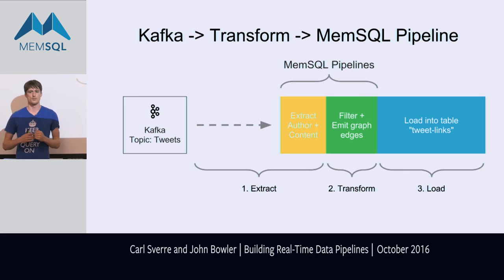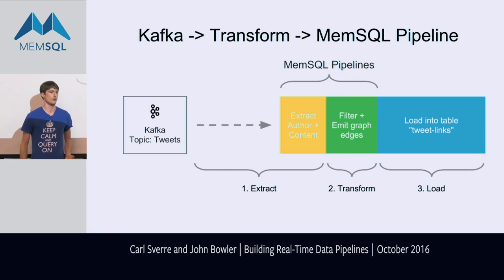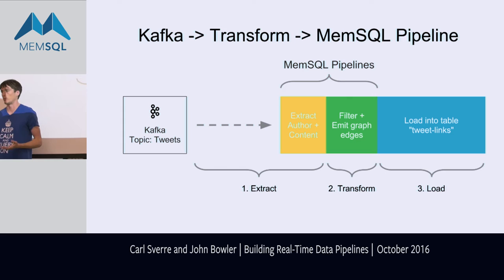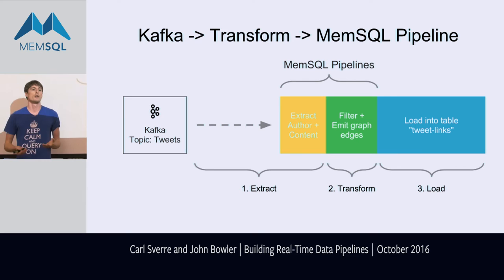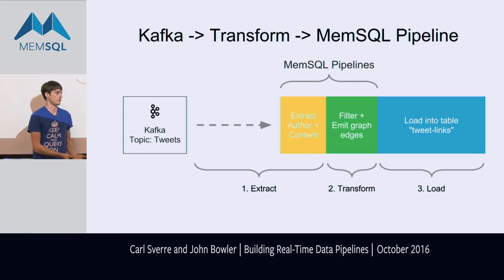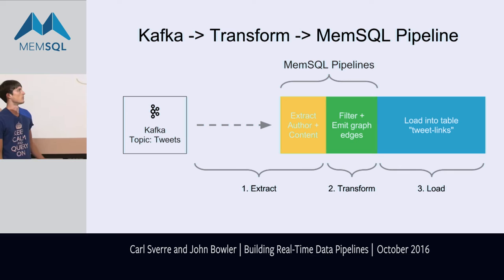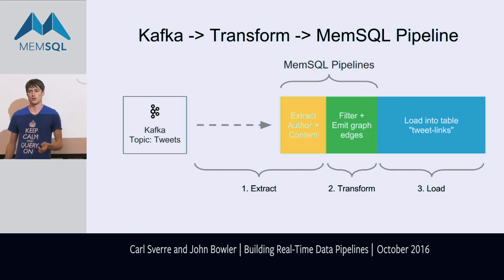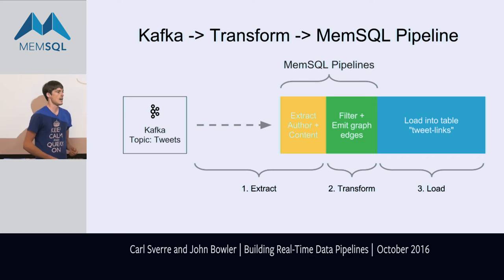The next pipeline is the graph pipeline. About two thirds of all tweets reference other users on Twitter, which forms a lightweight graph: a user A submits a tweet that references one or more other nodes. With this graph we can run cool queries — for example, who is the most influential person on Twitter in the time window we've scanned. This pipeline uses the same topic but runs a Python transform. The transform looks at the tweet body, grabs all referenced usernames, and emits tuples of author-to-reference as it processes all the tweets.